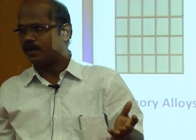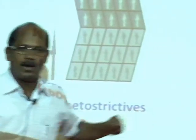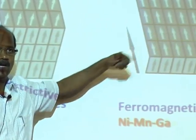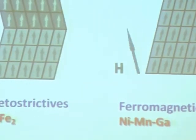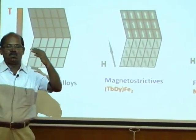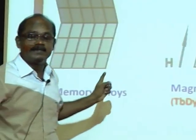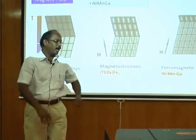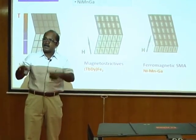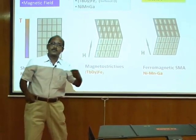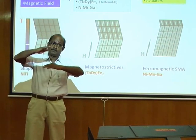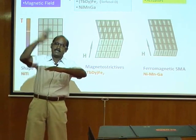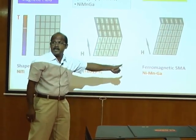In the ferromagnetic shape memory alloy, the twins and twin boundaries are actually moving. As a result, the actuator starts moving. The response of this material is very much faster compared to the other two materials. When temperature is applied, the Nickel-Titanium actuator shows a slow response. On the other hand, in the ferromagnetic shape memory alloy made of Nickel-Manganese-Gallium, when a small magnetic field is applied, the actuator response is very fast. That is why this material is more superior than the conventional shape memory alloy.